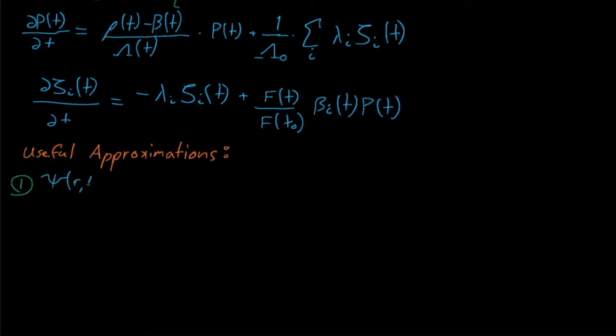First, we'll assume that the flux shape doesn't change significantly from the original flux shape. In essence, this assumes that any changes in the power cause our flux to scale uniformly throughout the reactor core during the course of a transient. A transient with complicated localized effects, such as a BWR that might see coolant voiding in only one channel, would of course violate this assumption, but for most simple transients, this is a reasonable approximation.